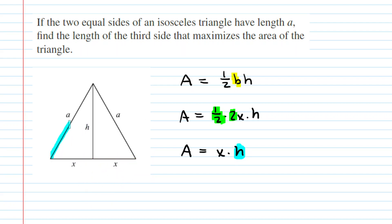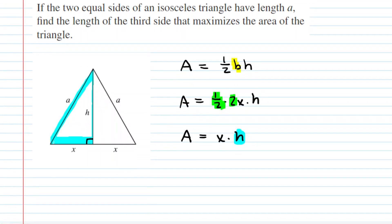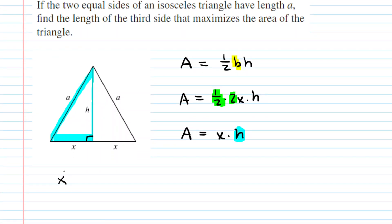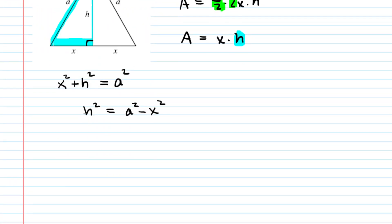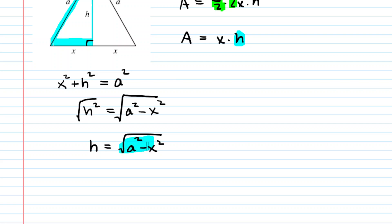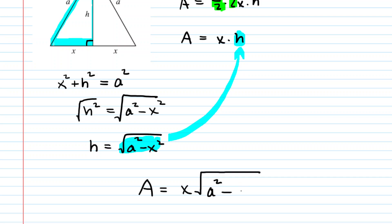To accomplish that goal, let's take a look at this right triangle. We know that because we dropped the height straight down, this formed a right angle. We do have a right triangle, and therefore the Pythagorean theorem would be applicable. We know that X squared plus H squared equals the hypotenuse squared, so it equals A squared. We solve this for H by subtracting X squared from both sides, then taking the square root of both sides. So now we have H is equal to the square root of A squared minus X squared. We're going to plug that expression for H into our area equation, so now we have area is equal to X multiplied by the square root of A squared minus X squared.